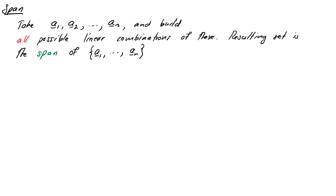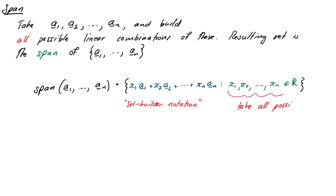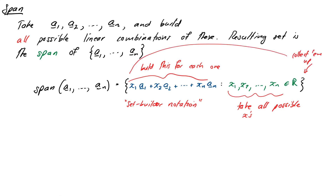We can write this down mathematically: the span of a1 through an is the set of x1*a1 + x2*a2 + ... + xn*an, where x1 through xn are in R. In case you haven't met this notation before, it's called set-builder notation. The way to understand it is that you take all possible choices of the x's you could possibly dream up, then for each one of those choices you build the expression on the left of the colon, and then you collect them all together, at least conceptually, into a big massive set.